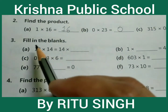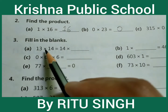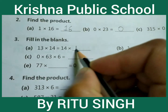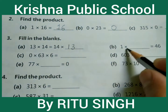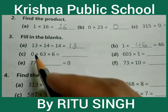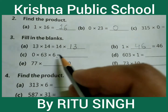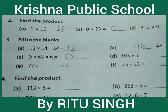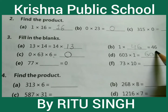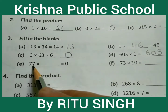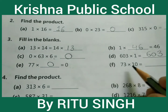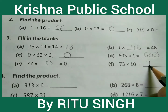Next, question number 3: fill in the blanks. 13 into 14 equal to 14 into 13 — write 13. 1 into 46 equal to 46. 0 into 63 equal to 0. 603 into 1 equal to 603. 77 into 0 equal to 0. 73 into 10 equal to 730.